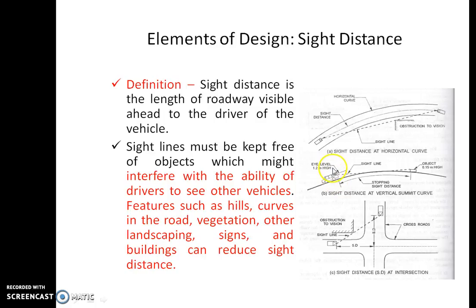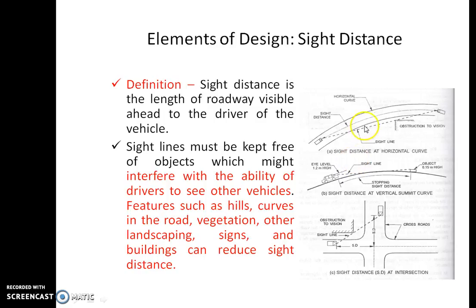When it comes to the vertical curve, if you assume a driver height of 1.2 meters and an object height of 0.15 meters, the driver can see the object. We have taken 1.2 meters height because drivers of trucks and multi-axle vehicles can see the opposite vehicle very easily, so the worst case vehicle is the car. For that we have taken 1.2 meters driver height and object height of 0.15 meters. This much length should be maintained; otherwise, the same accident scenario from the horizontal curve will occur here as well.